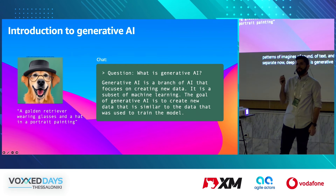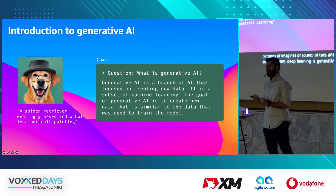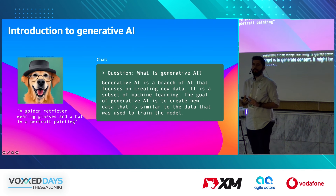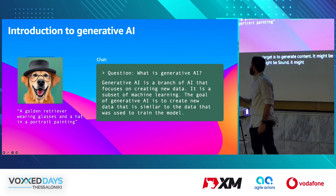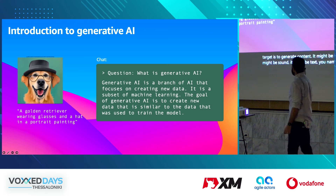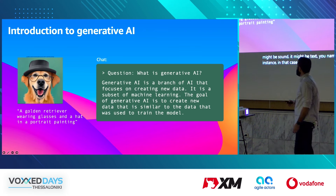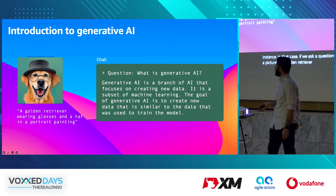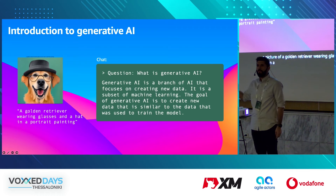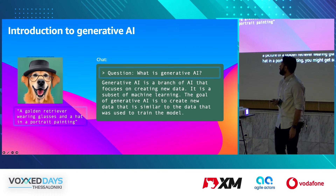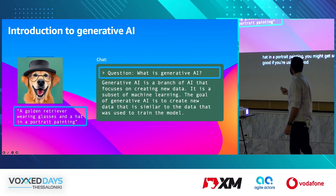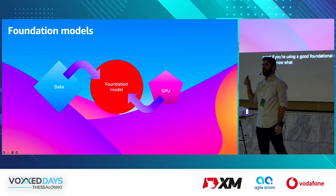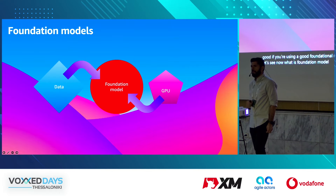Generative AI's target is to generate content — it might be images, sound, text, you name it. For instance, if we ask for a picture of a golden retriever wearing glasses and a hat in a portrait painting, you might get something good if you're using a good foundation model. Foundation models are at the core of generative AI.